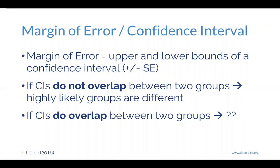If our confidence intervals do not overlap between two groups — if we've plotted those confidence intervals for two different groups — then it's highly likely those groups are different. Because so many of our data values by probability are going to fall close to that mean. So if they're not falling close to the mean, if they're not within those confidence intervals, then it's highly likely those groups might be different. Do we know they're actually different? No — that's where common sense comes in. But signs point towards they're different.